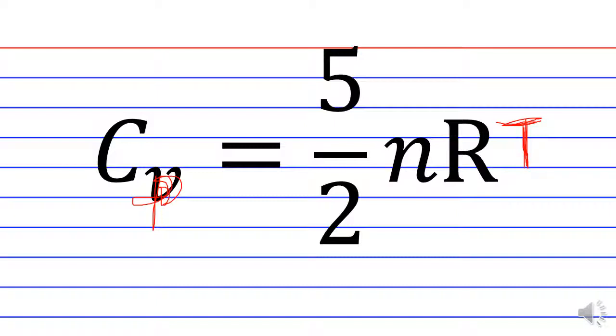There's only a slight difference in the coefficient, so just note the difference. Constant pressure heat capacity is slightly higher than constant volume heat capacity.